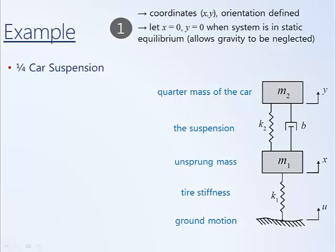In general in this course, we choose X equals zero and Y equals zero when the system is in static equilibrium. The suspension and tire will sag under the weight of the vehicle. By setting X and Y equal to zero from this point of static equilibrium, it allows us to neglect the weight of the masses — the weights are offset by the static deflection of the springs.